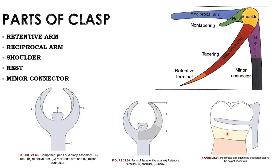The retentive arm is divided into the retentive terminal and the retentive arm itself. The retentive terminal is the only flexible component of the clasp; all others are rigid and placed above the height of contour. Only the retentive terminal should be below the height of contour.